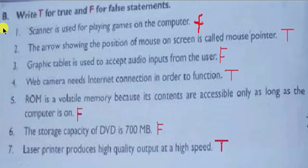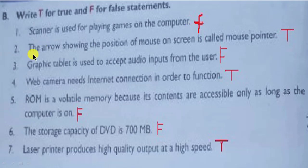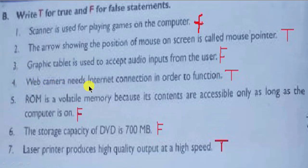Part B is true or false — write T for true and F for false. First: scanner is used for playing games on the computer — answer is False. Second: the arrow showing the position of the mouse on screen is called mouse pointer — answer is True. Third: graphic tablet is used to accept audio inputs from the user — answer is False. Fourth: web camera needs internet connection in order to function — answer is True.